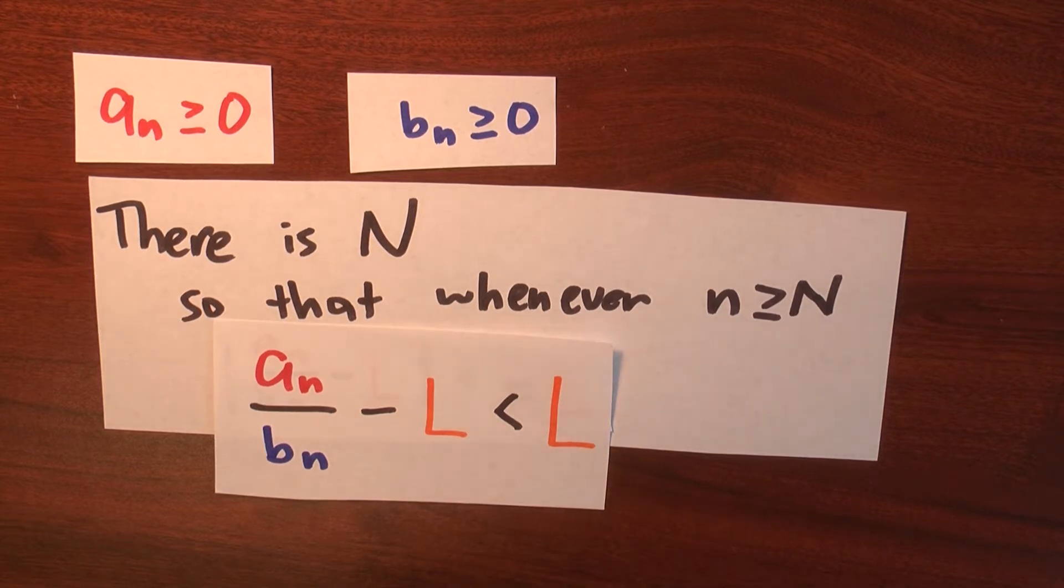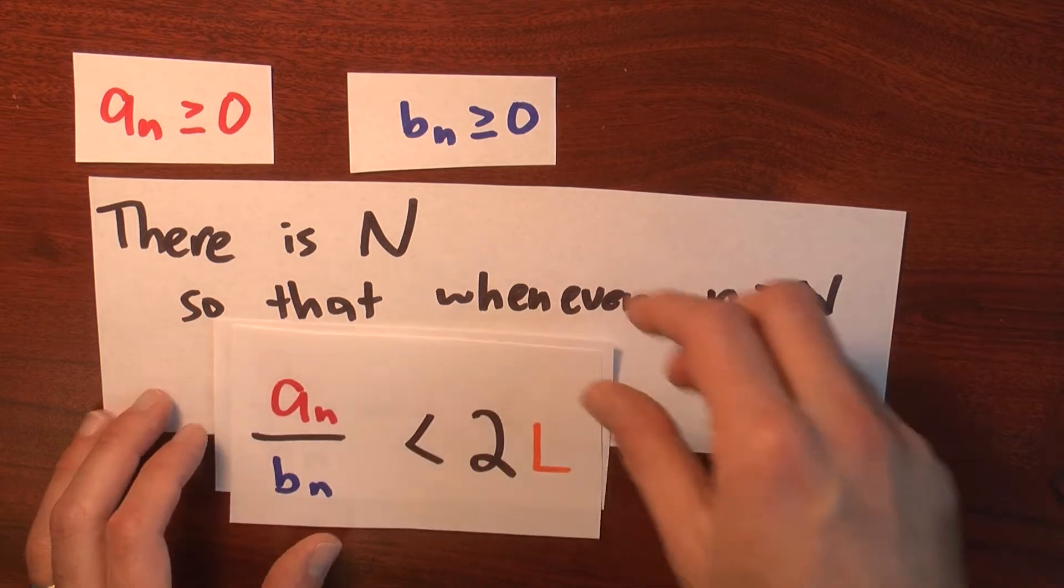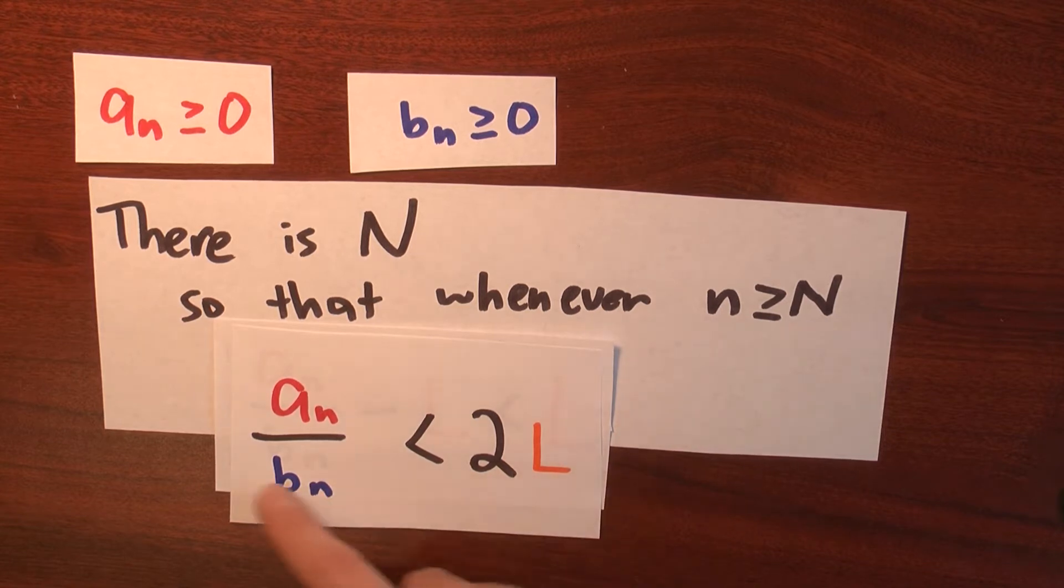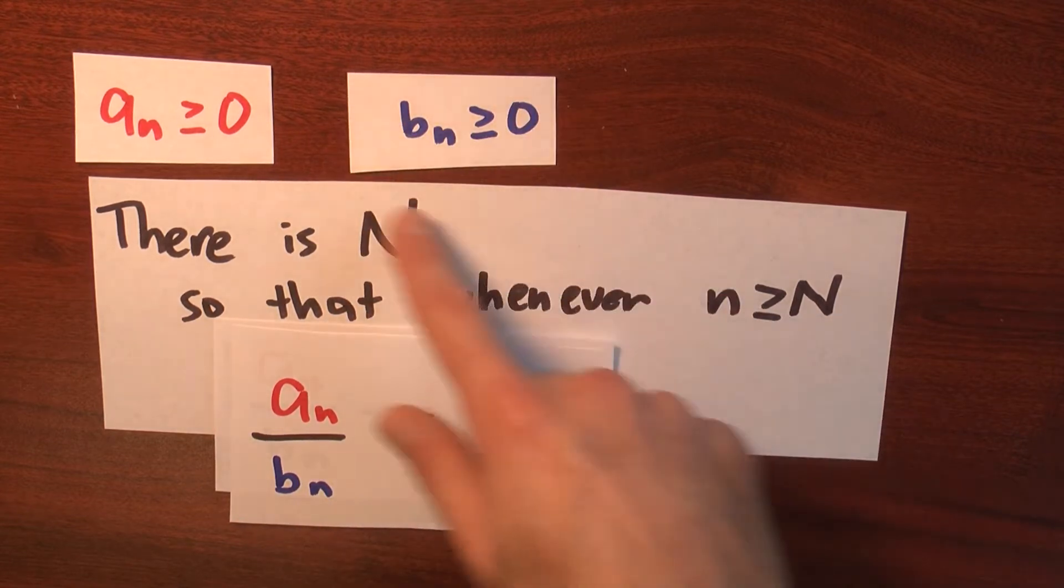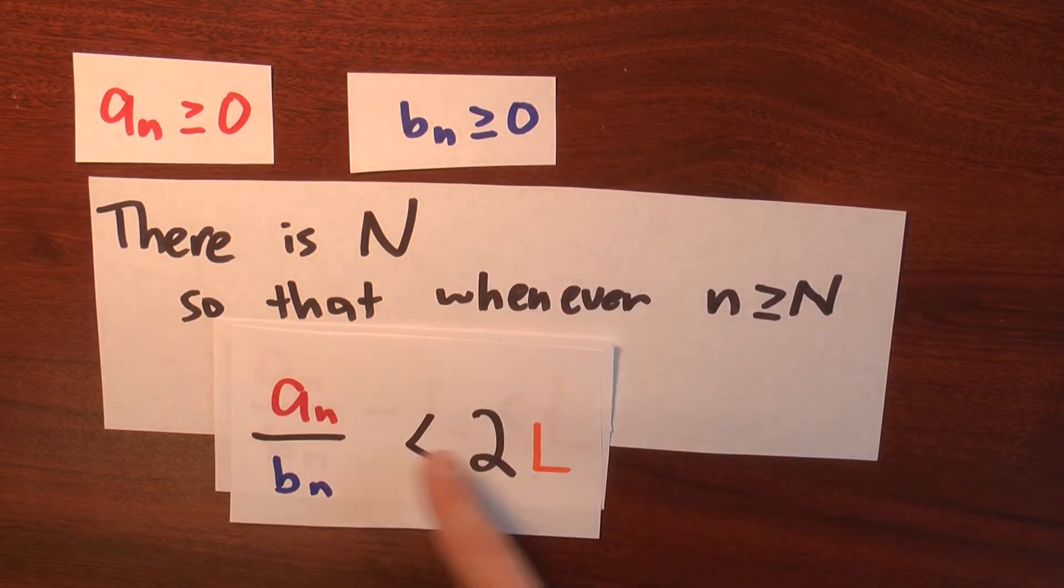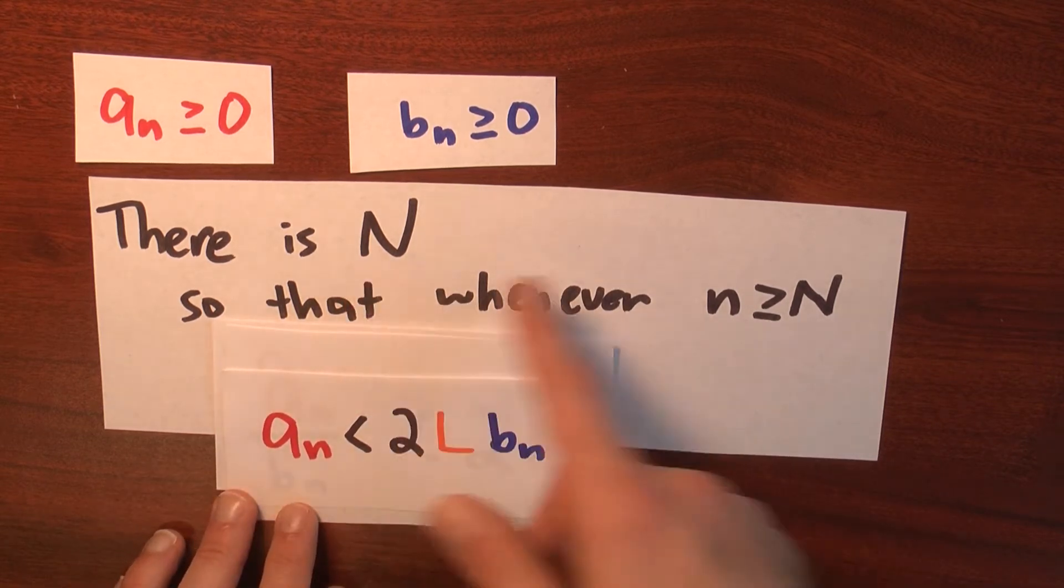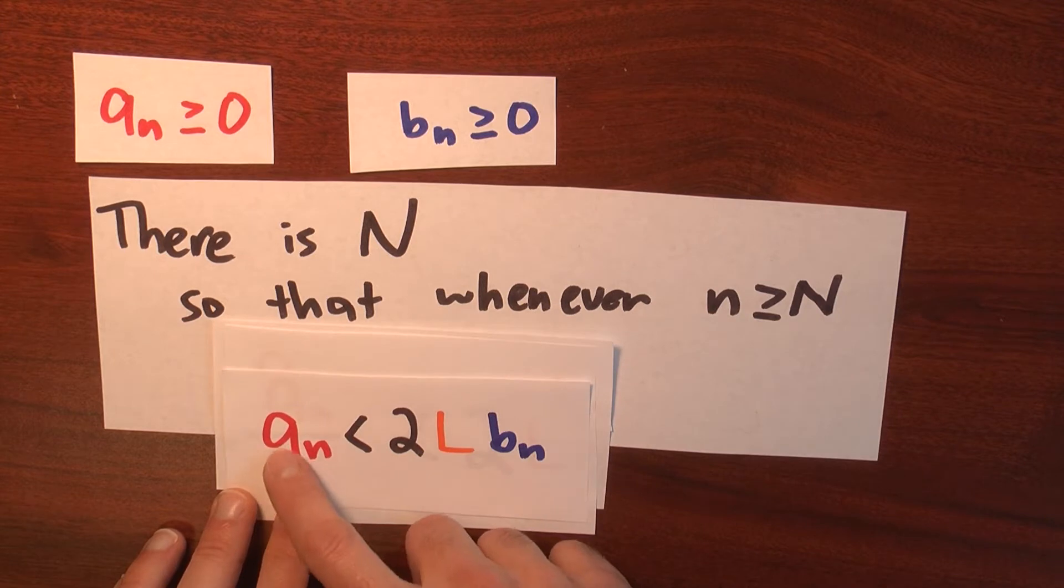You can add L to both sides of that inequality. And I get this, that a sub n over b sub n is less than 2L. And now I can multiply both sides by b sub n. And that's okay, because b sub n is non-negative. So it doesn't change the direction of this inequality. And that tells me that, at least for large values of little n, a sub n is less than 2Lb sub n.